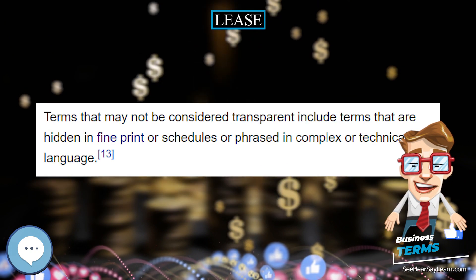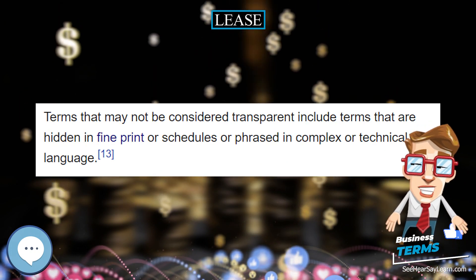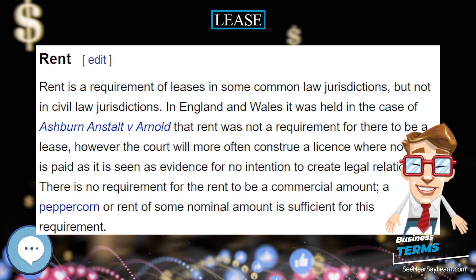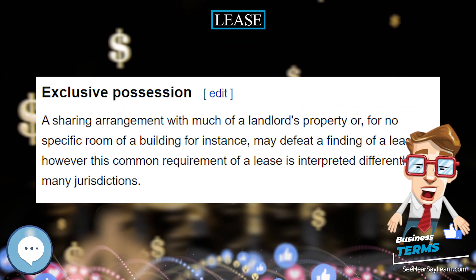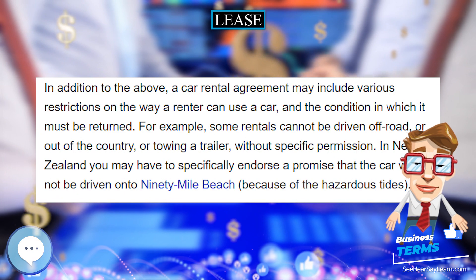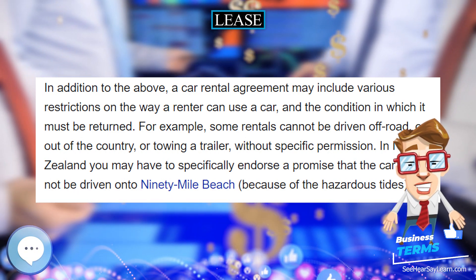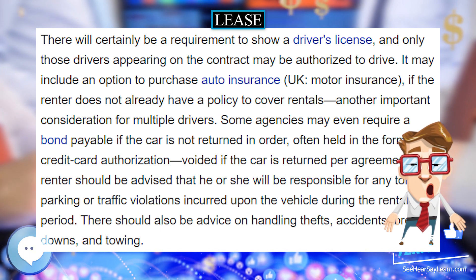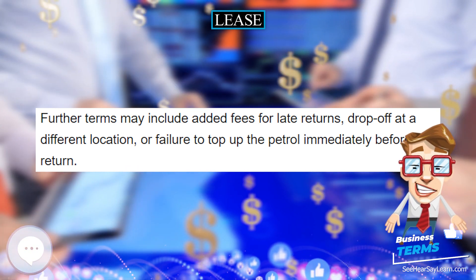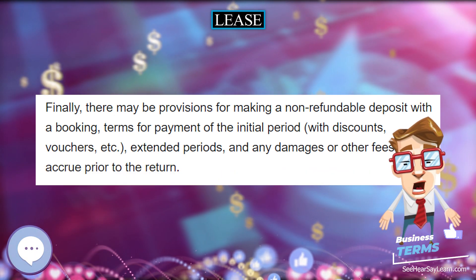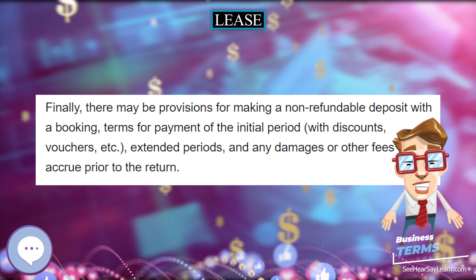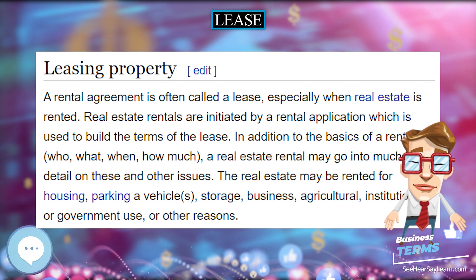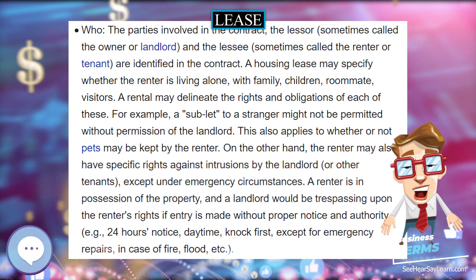The lease will either provide specific provisions regarding the responsibilities and rights of the lessee and lessor, or there will be automatic provisions as a result of local law. In general, by paying the negotiated fee to the lessor, the lessee — also called a tenant — has possession and use, the rental, of the leased property to the exclusion of the lessor and all others except with the invitation of the tenant. The most common form of real property lease is a residential rental agreement between landlord and tenant. As the relationship between the tenant and the landlord is called a tenancy, this term generally is also used for informal and shorter leases.